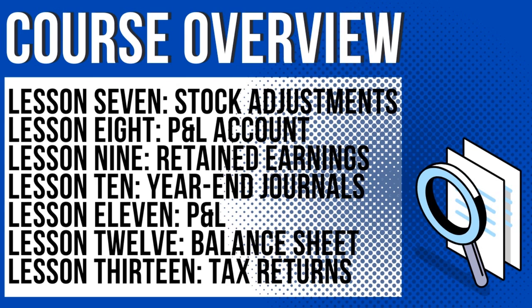Lesson eleven: the P&L — that's the profit and loss statement. I'll show you how to compile that, how it's useful, why we need to do it, and how to lay out a standard profit and loss statement — sometimes called the statement of comprehensive income. Lesson twelve: the balance sheet, or statement of financial position. I'll show you how to compile that statement and how we can read it and use it.